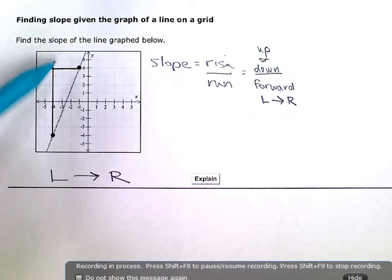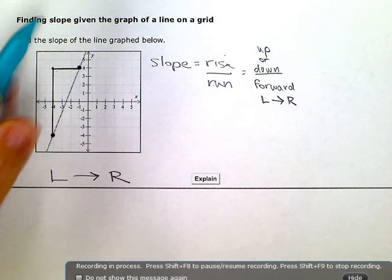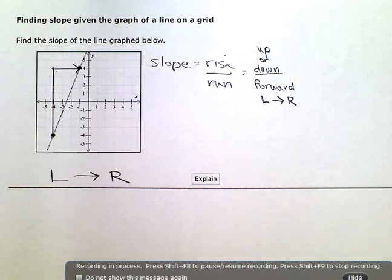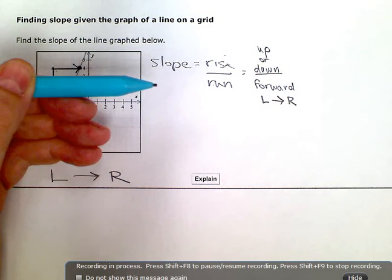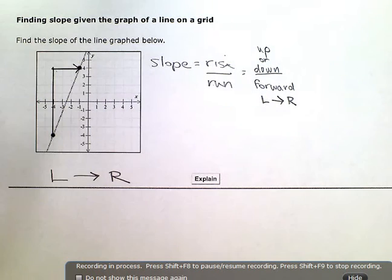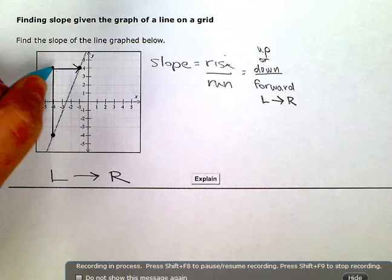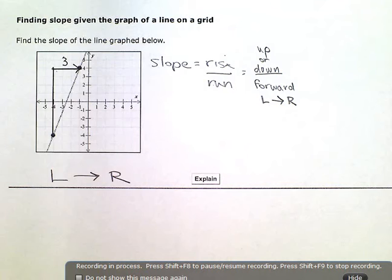Now this is my run, my forward. That's what's going to go on the bottom. And again, it's easiest to just always do your run left to right or going forward. So this is three.